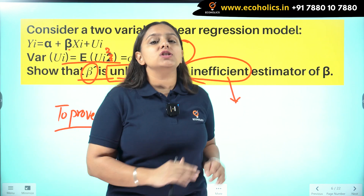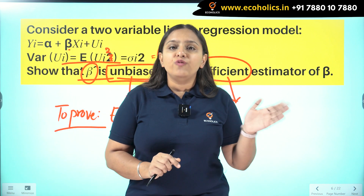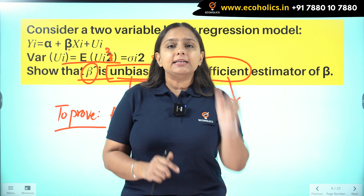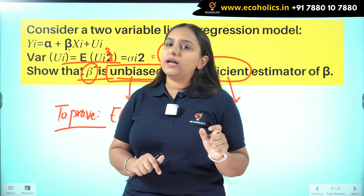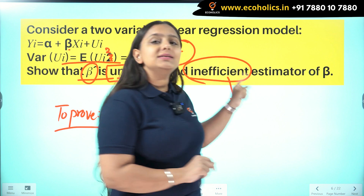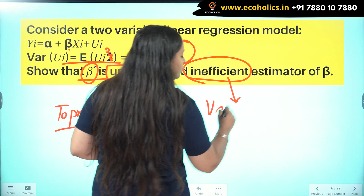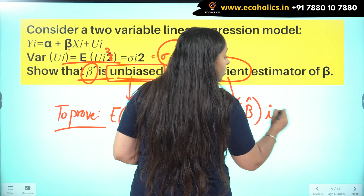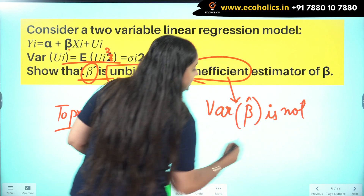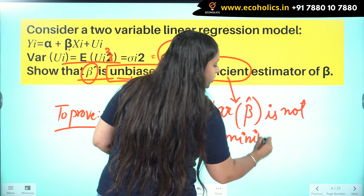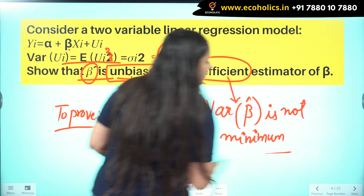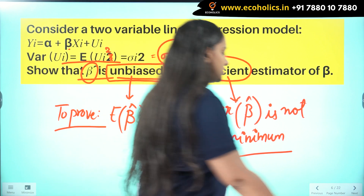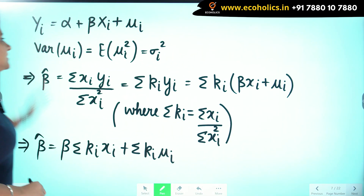When the question says inefficient, efficiency means we show the variance of the estimator is the least — the minimum value we can get. If it is inefficient, I have to show that variance of beta hat is not minimum.